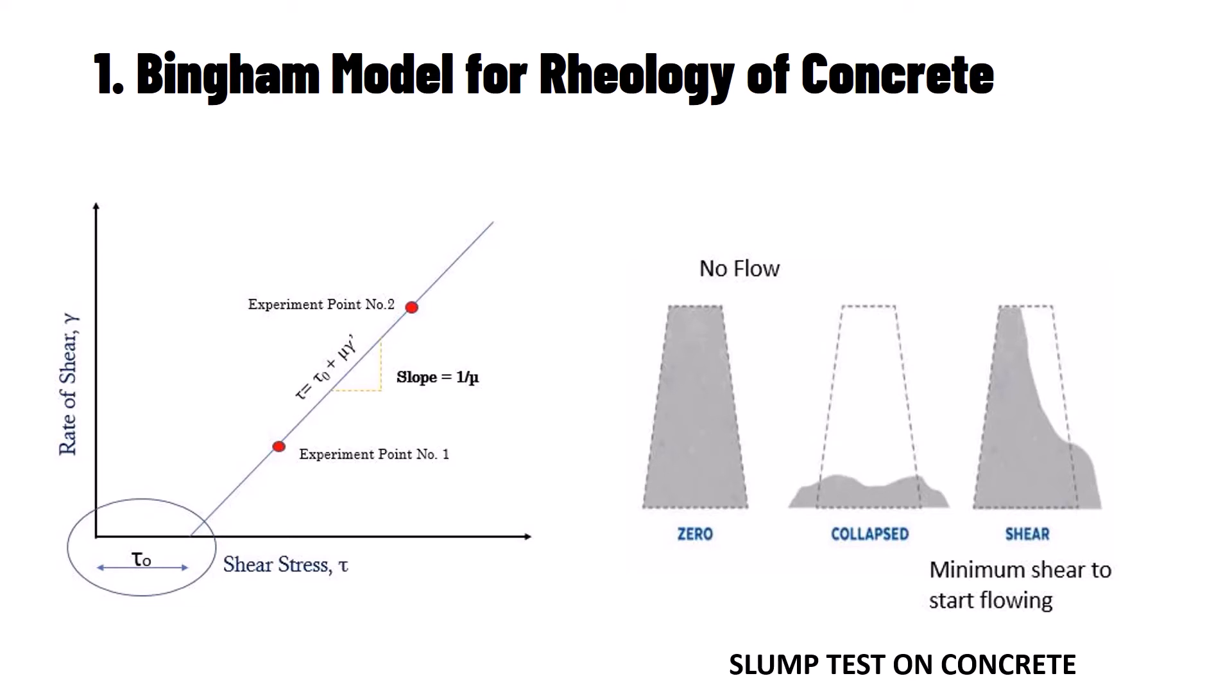So, this minimum shear value, τ₀, will be different for different conditions of concrete. First condition of concrete where the concrete is a stiff mix, the τ₀ value is zero while there is a minimum shear value for the third case. Collapsed condition shows it has a very high shear value.